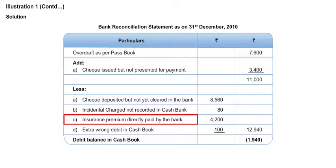Insurance premium paid by bank but not recorded in cashbook. As per standing instruction given, the bank has paid the insurance premium. Since bank has paid it, the entry will first appear in your passbook, and since it is a payment, the overdraft balance in passbook will increase. But the entry is not yet made in cashbook, so in cashbook it will be the opposite sign — that is negative — so you will basically deduct. Insurance premium directly paid by the bank: 4200 less.